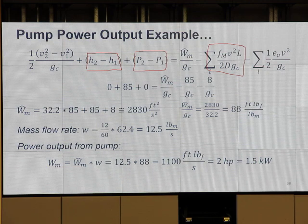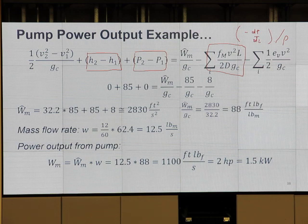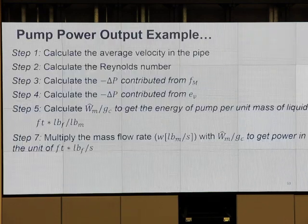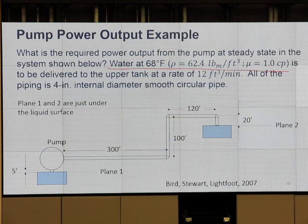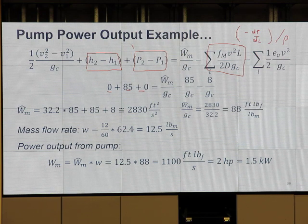You may notice F·V²·L over 2D·Gc — that is minus dP/dL, divided by density rho. So it's pressure drop per unit length, divided by density. In the example we have, you see the substitution: 0.85-something — that is for the case of water. We say water and use the density of water to find the horsepower required for pumping water.